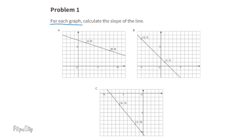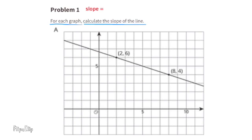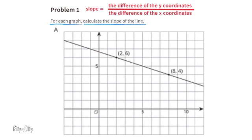Problem number 1. For each graph, calculate the slope of the line. We have to remember that the slope equals the difference of the y coordinates over the difference of the x coordinates, or y minus y divided by x minus x. You can do this either way: y2 minus y1 over x2 minus x1, or y1 minus y2 over x1 minus x2. If you don't understand it quite yet, don't worry, I'll show you what I mean.